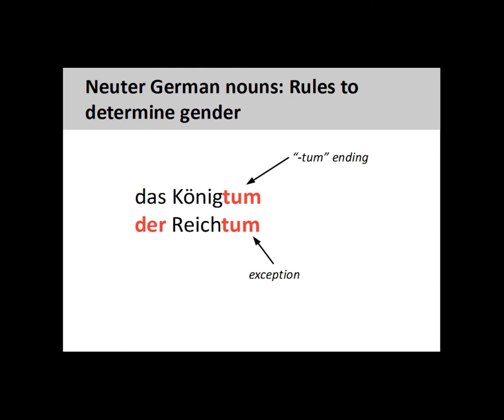Nouns ending in -tum will generally be neuter, such as Königstum meaning Kingship, although there are some exceptions to this rule, such as Reichtum meaning Riches.